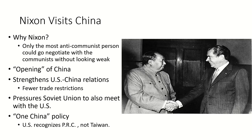The United States made several changes: they allowed more trade, stopped recognizing Taiwan as the government of China, and created the One China policy — in which communist China, from that moment until today, is recognized by the U.S. government as the legitimate ruler of China.